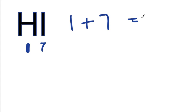1 plus 7 equals 8. So we have a total of 8 valence electrons that we're going to use to form chemical bonds and fill the octets of atoms.